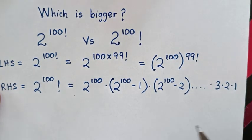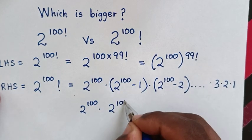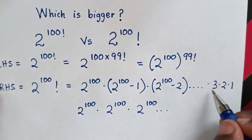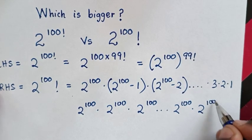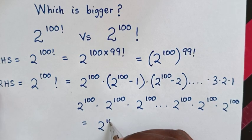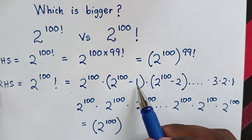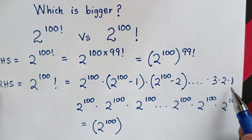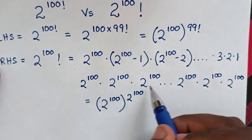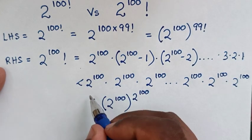This multiplication of these numbers will compare with 2 to the power of 100, times 2 to the power of 100, times 2 to the power of 100, and so on. The count of these factors of 2 to the power of 100 is 2 to the power of 100 itself. So the right-hand side is less than or equal to 2 to the power of 100, raised to the power of 2 to the power of 100.